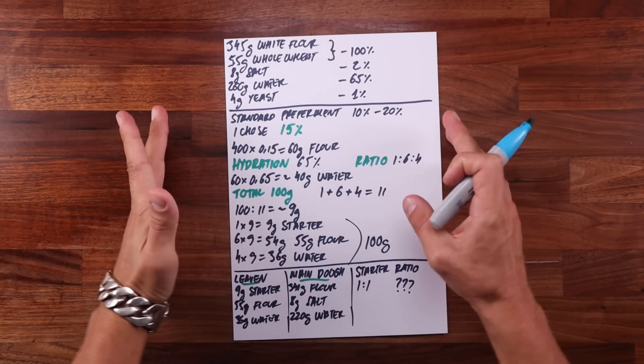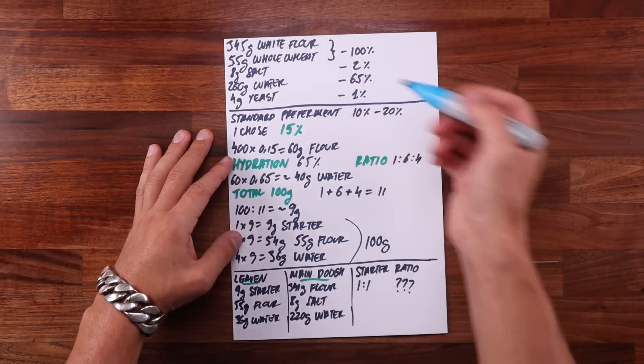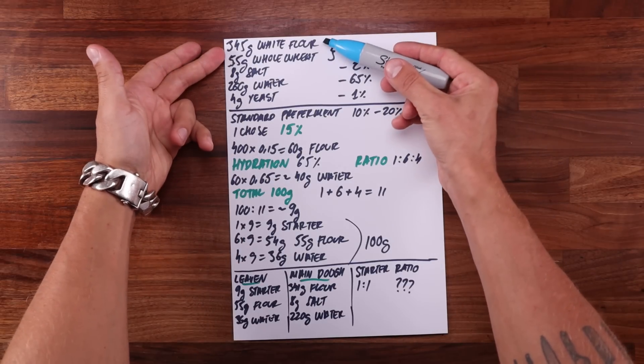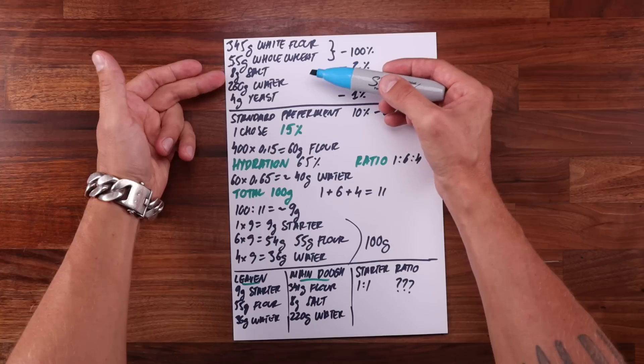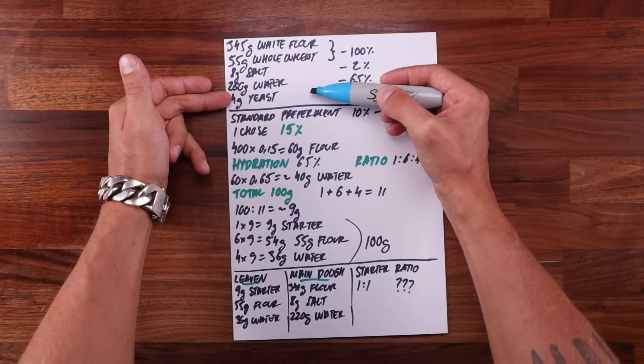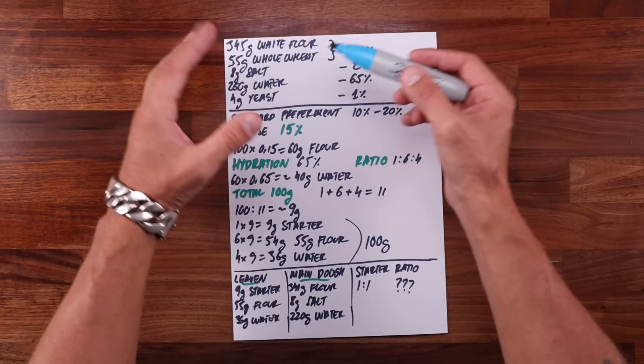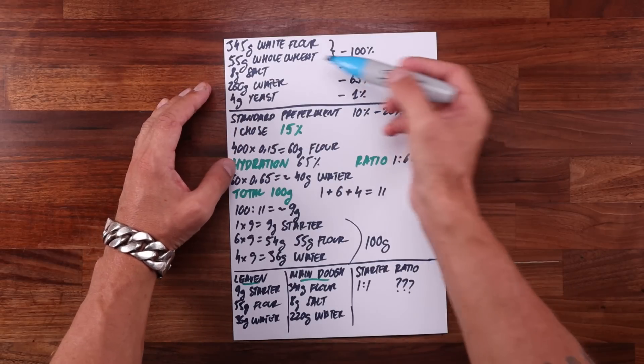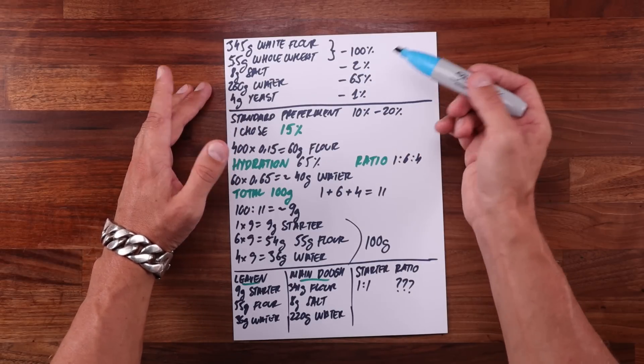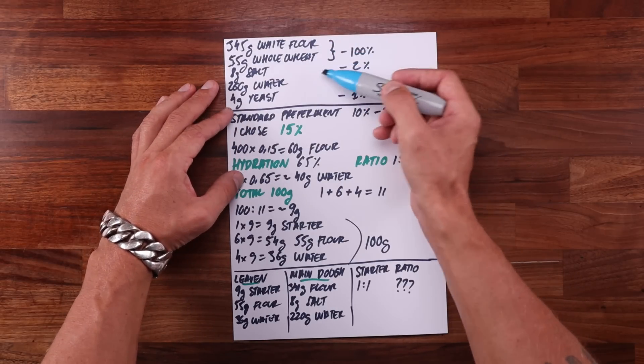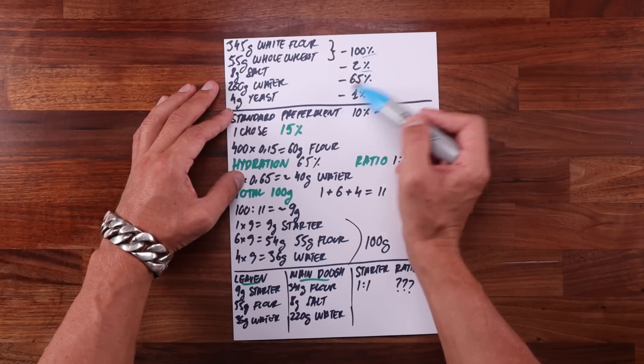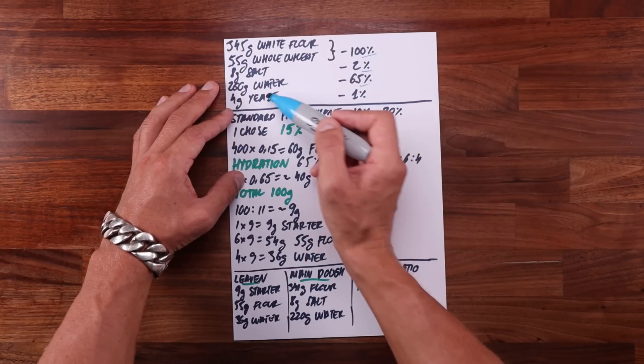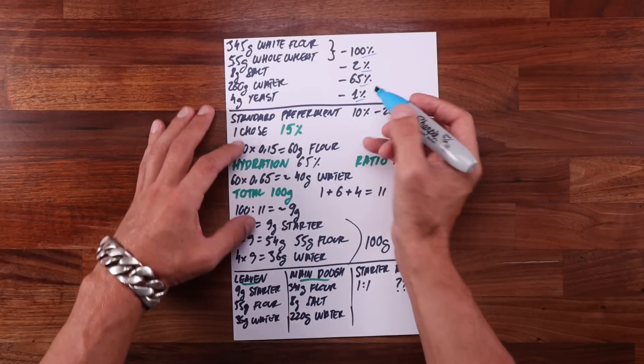And this is how I would do it. At the top of the page we have the straight through yeast dough formula. There's 345 grams of white flour, 55 grams of whole wheat flour, 8 grams of salt, 260 grams of water and 4 grams of yeast. Now in baker's percentage both the whole wheat flour and white flour make up 100%, 2% of salt, 65% water and 1% of dry yeast. Baker's percentage works exactly the same way in the main dough as well as in the preferment. We're not using yeast today so we're going to cross it off right away.